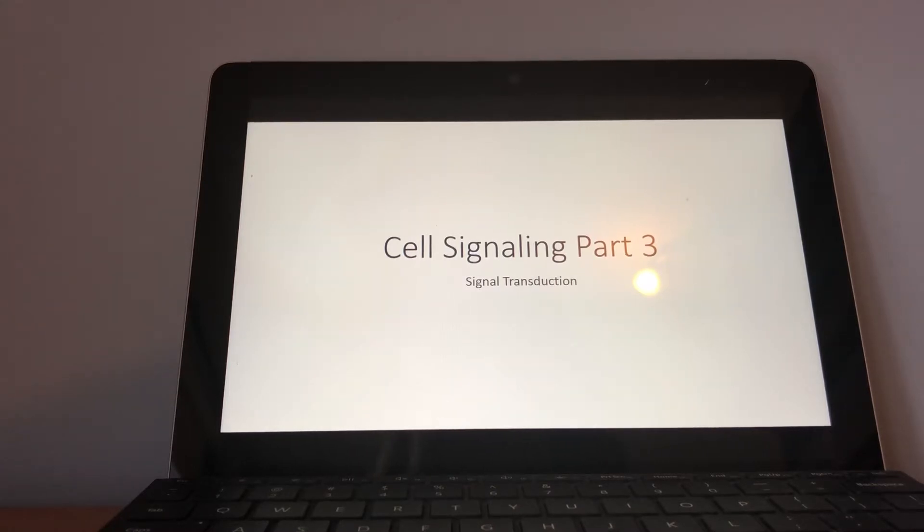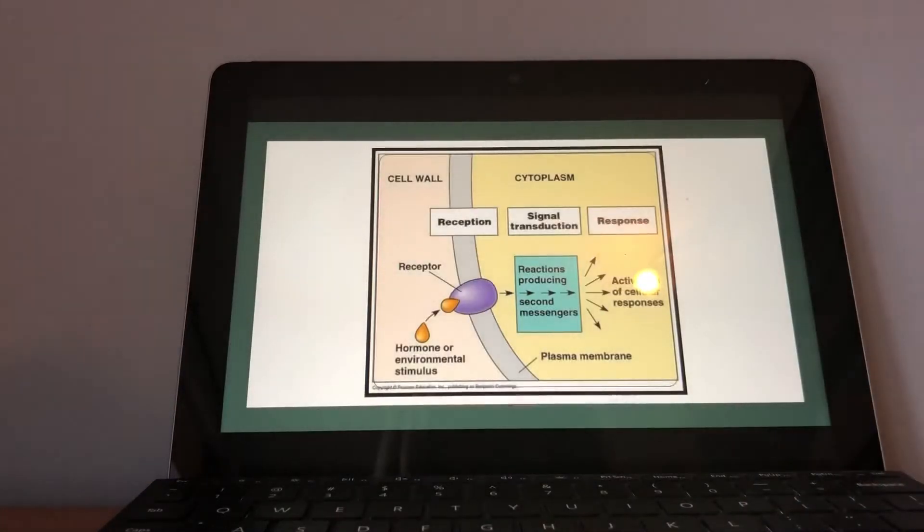It could be either short distances or long distances. It can be using ligands to signal themselves or to target other cells. So what we're going to be looking at now is how does the cell actually, once it is signaled, how does it elicit a response.